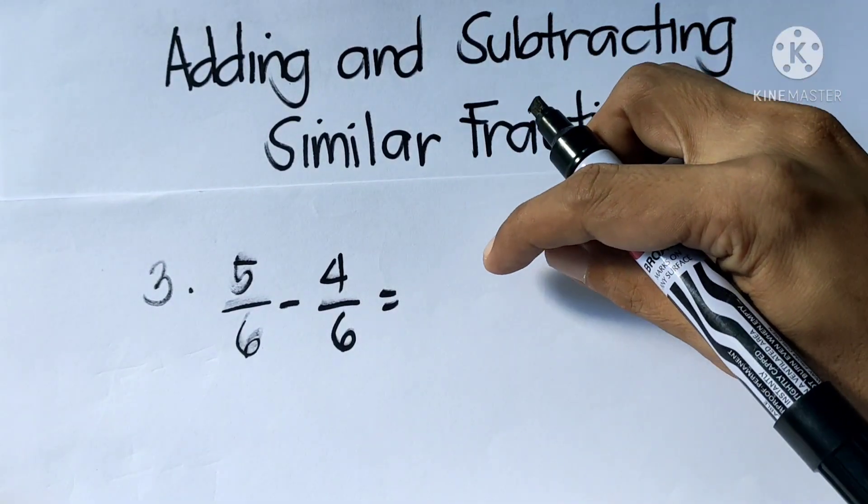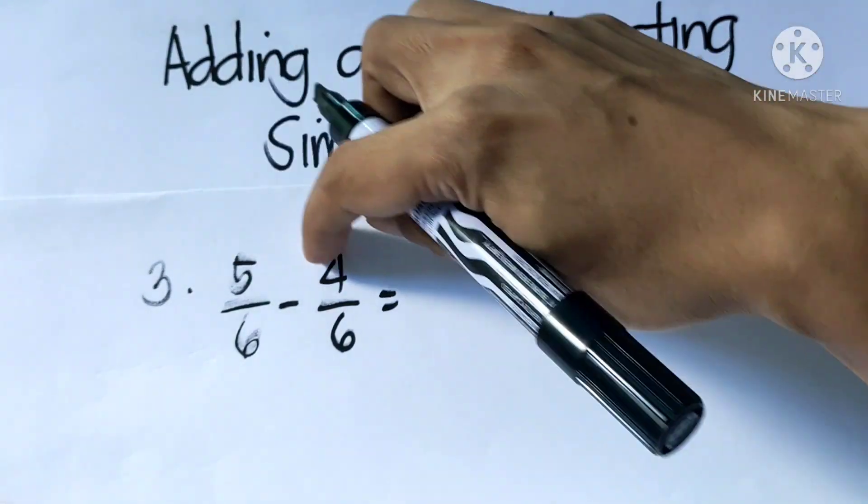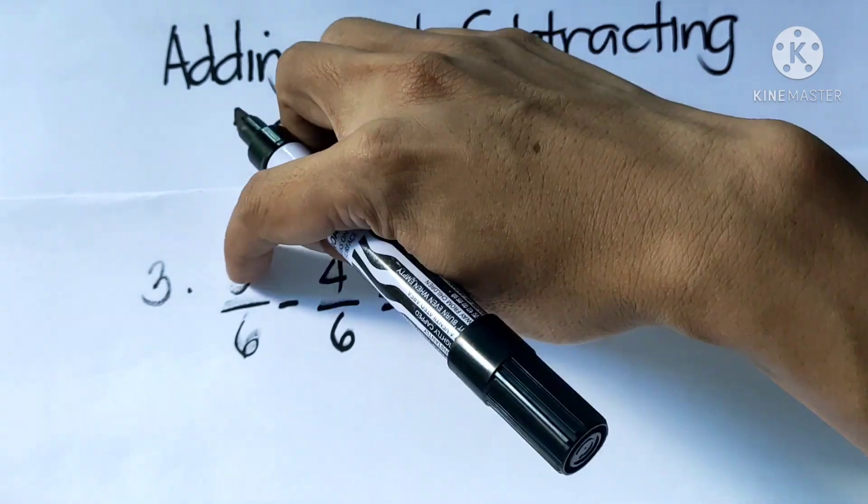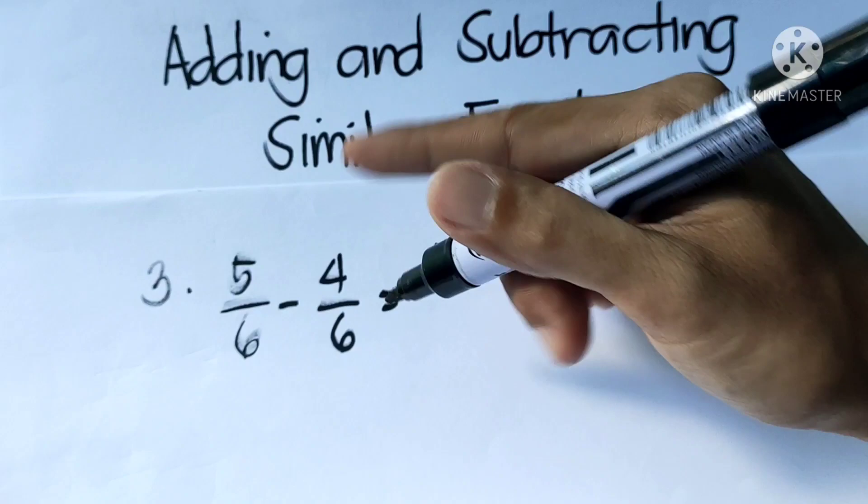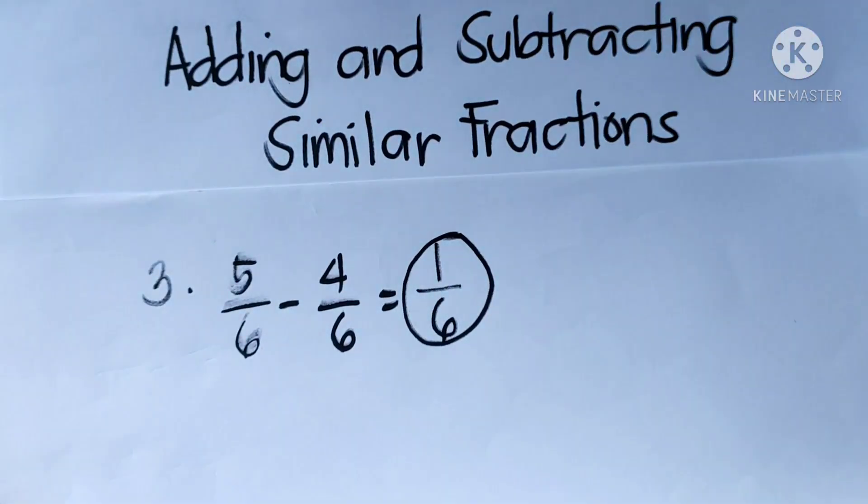Same as addition, we're going to subtract the numerators. So 5 minus 4 is 1. Then copy the denominator, which is 6. So the answer is 1 over 6.